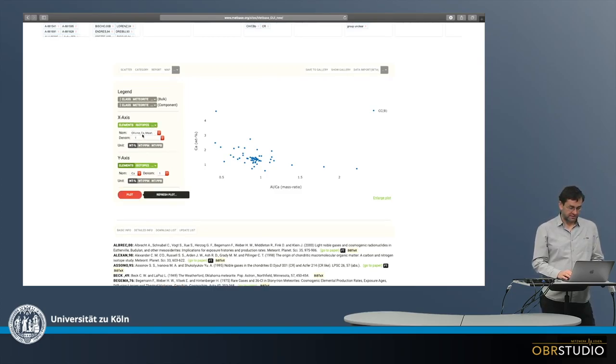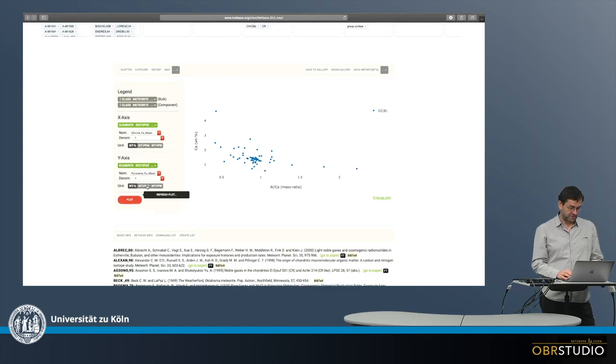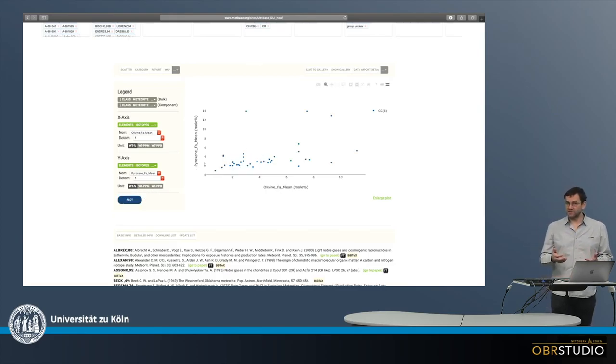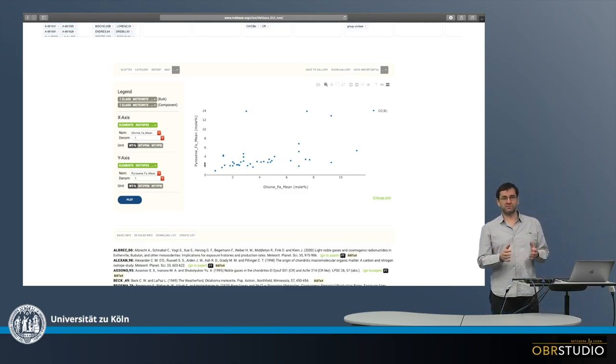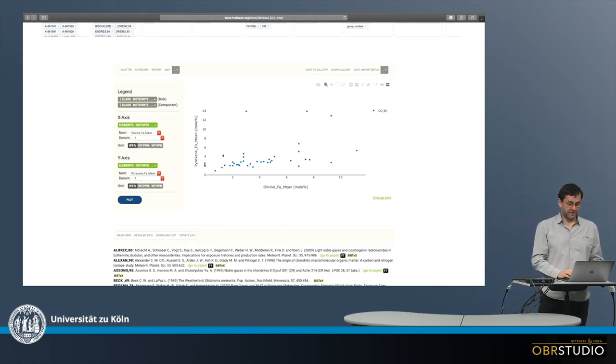Or I could even choose something very different, or not too very different, but different, like the olivine phthalate versus the pyroxene phthalate, and then plot this against each other. So these are already, to some extent, unprocessed data, phthalate and phthalate, but I can also plot them against each other because these are again two columns of data.